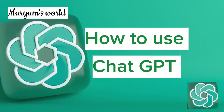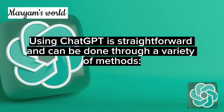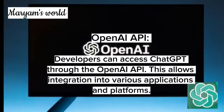How to use ChatGPT: Using ChatGPT is straightforward and can be done through a variety of methods. OpenAI API — developers can access ChatGPT through the OpenAI API, which allows integration into various applications and platforms.